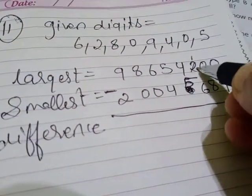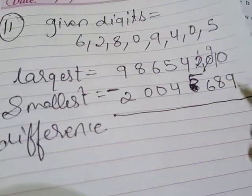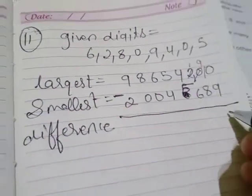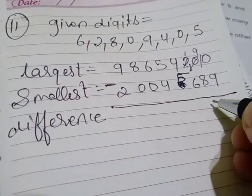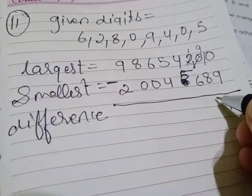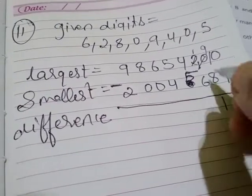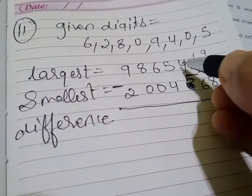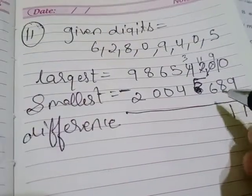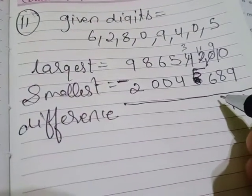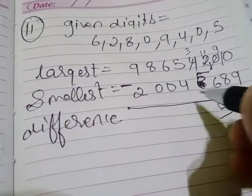Starting the subtraction: this becomes 1 and then 10; again this one becomes 9 and here 10. 10 minus 9 is 1, 9 minus 8 is also 1. Now this one will be 3 and here 11. 11 minus 6 will be 5.